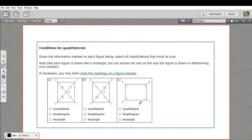First off the bat, all of these are polygons. They all have four sides. So I'm just going to check quadrilateral for each one.